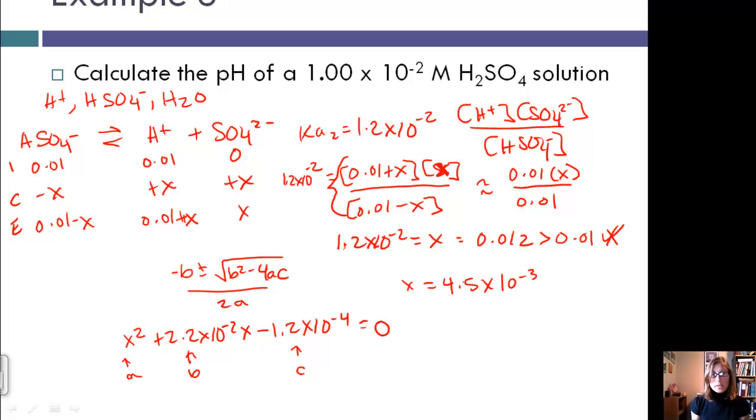Another value that you get is negative, so obviously that one's not going to work. And so then you can calculate your H+ as 0.01 plus 4.5 times 10 to the negative 3. So that gives us 0.0145. We want the pH of that, negative log of that concentration, and that gives us 1.84.